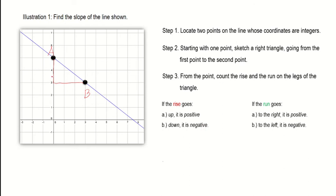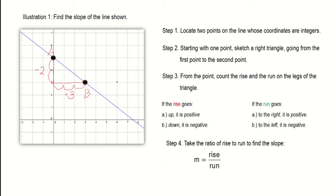From point A going to point B, we have two units down — since going down, it's negative. And from this point going to point B, we count three units. Since the run goes to the right, it is positive. So we have the ratio: the rise is negative two and the run is positive three.